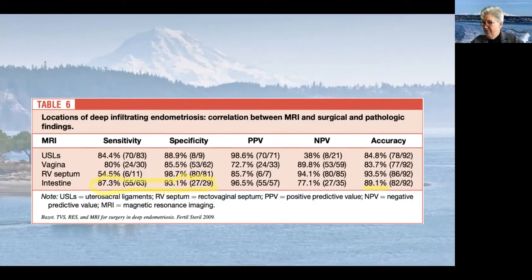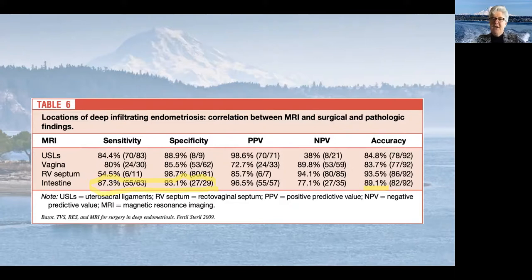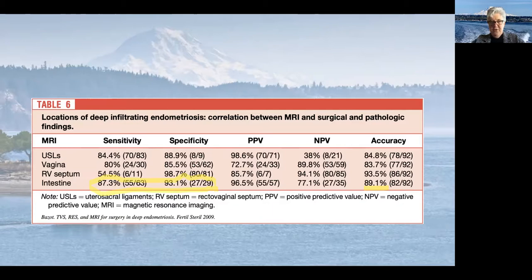The problem I have with MRI is that it's not so much that the imaging doesn't show the endometriosis — it's that the radiologists don't have enough experience with endometriosis to see it and recognize it. I generally want to see the images myself, because I've had MRIs being read as completely normal where there's a huge lesion of endometriosis that even I can see, and I do know what endometriosis looks like.